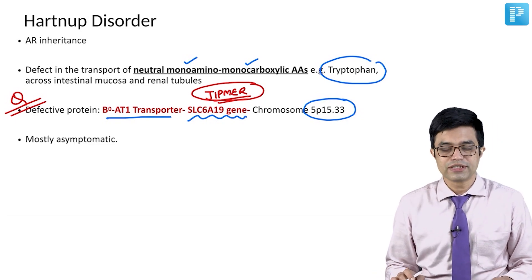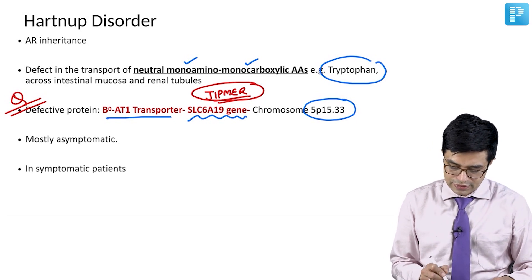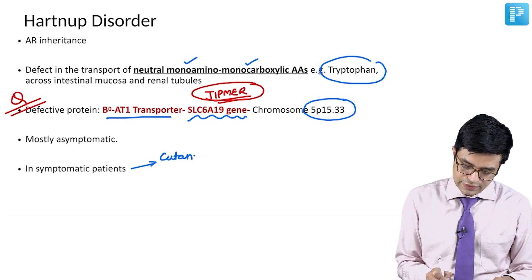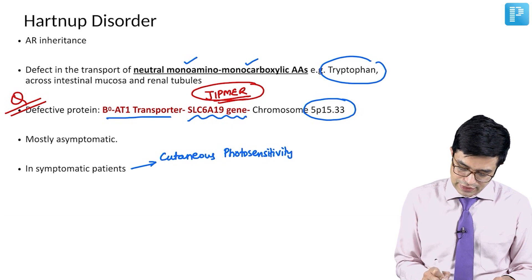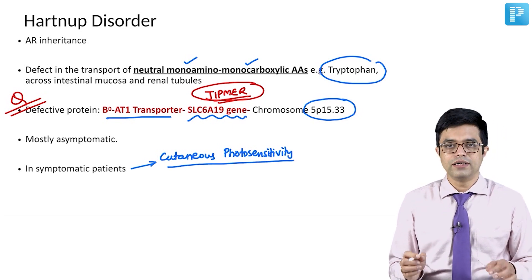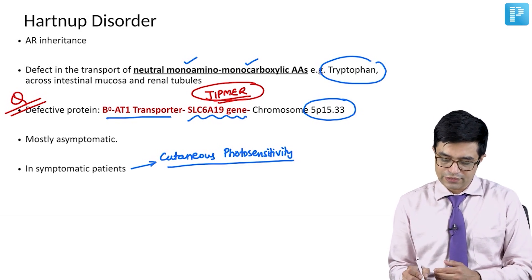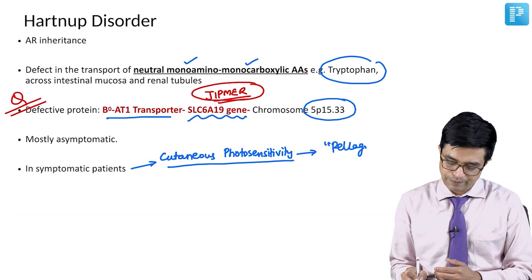Most Hartnup disorder patients are found to be asymptomatic. In some symptomatic patients, you may find features related to cutaneous photosensitivity. Tryptophan deficiency tends to produce a niacin deficiency-like state, so these patients will have cutaneous photosensitivity with a pellagra-like rash and a pellagra-like presentation.